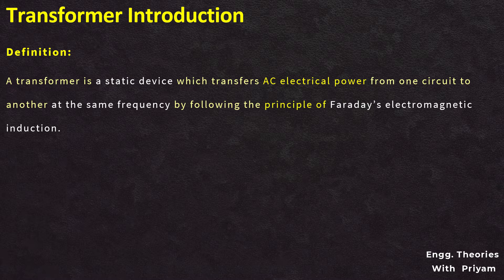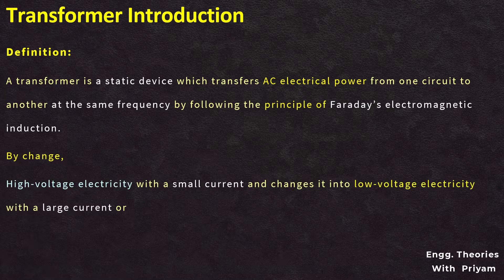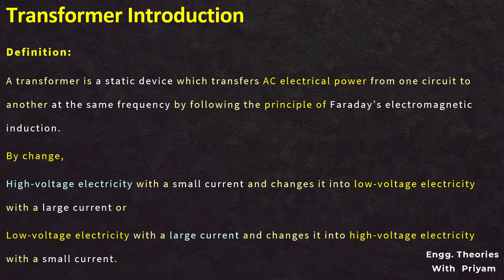Definition: A transformer is basically a static device which transfers AC electrical power from one circuit to another at the same frequency by following the principle of Faraday's electromagnetic induction. It is an electrical device that can change the voltage and current but keeps the power constant. A transformer takes high voltage electricity with a small current and changes it into low voltage electricity with a large current, or vice versa, while the power remains constant in both cases.